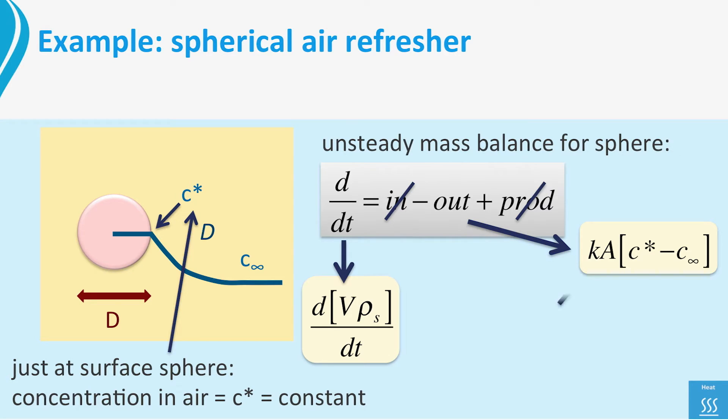Like the case of the cooling sphere, we know that we can find k from Sherwood times the diffusion coefficient divided by the diameter of the sphere. As the vapor is transported via diffusion, we may use Sherwood equals 2, quite analogous to Nusselt is 2 for the cooling sphere.